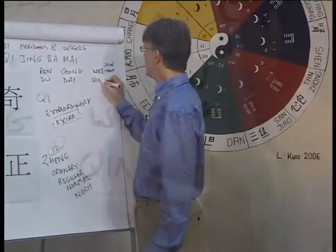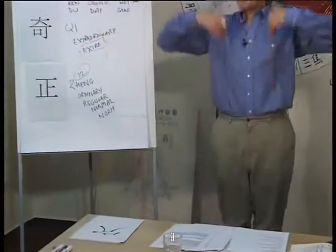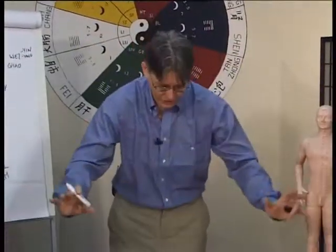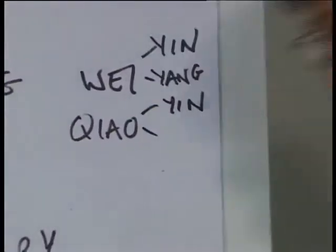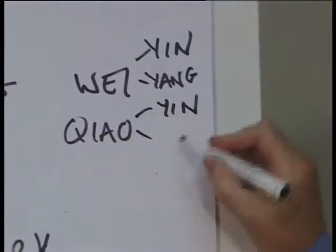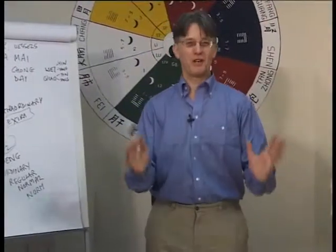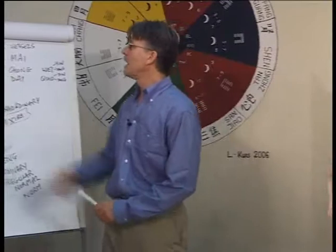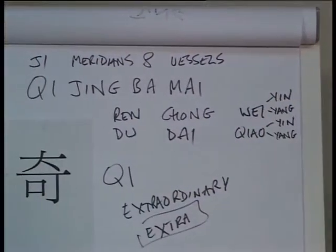And finally, we have the Chao Mai. Chao is the heel, and they come from the area of the heel, and they come from the foot, and go up to the head. And they have different functions, but the main function is to regulate the movement of the yin, yin Chao, and the yang, the yang Chao. So these, in a very brief way of putting them, are the Qi Jing Ba Mai, the eight extraordinary meridians.